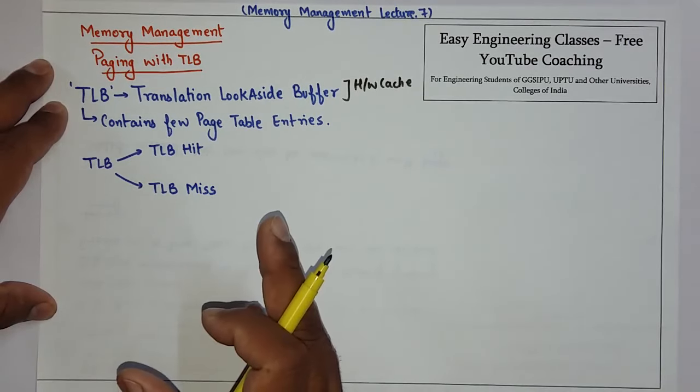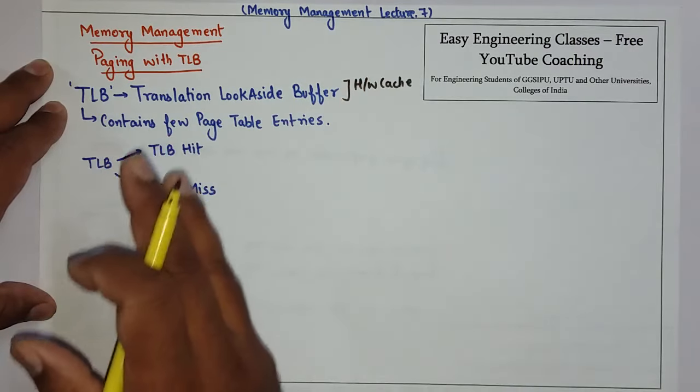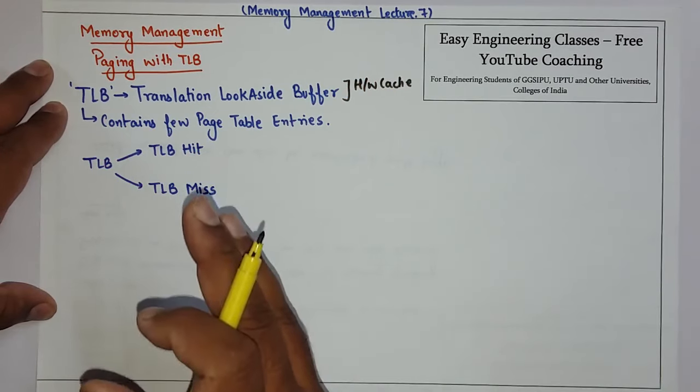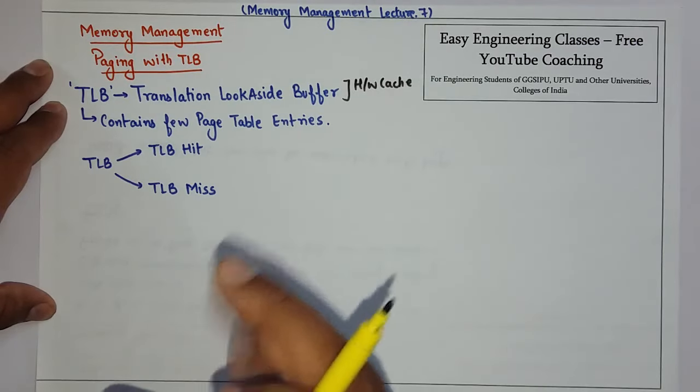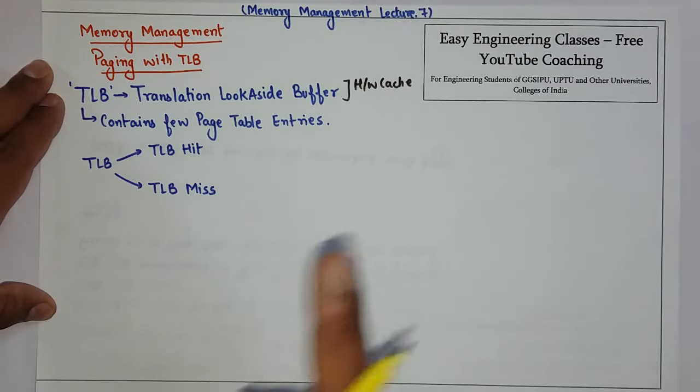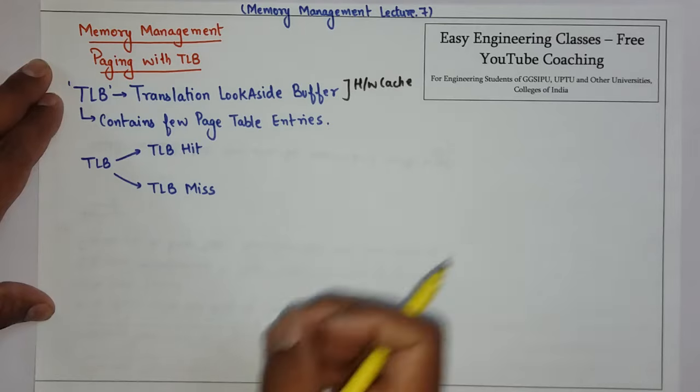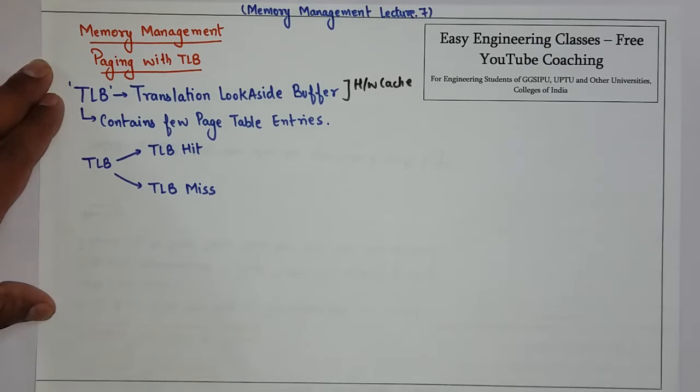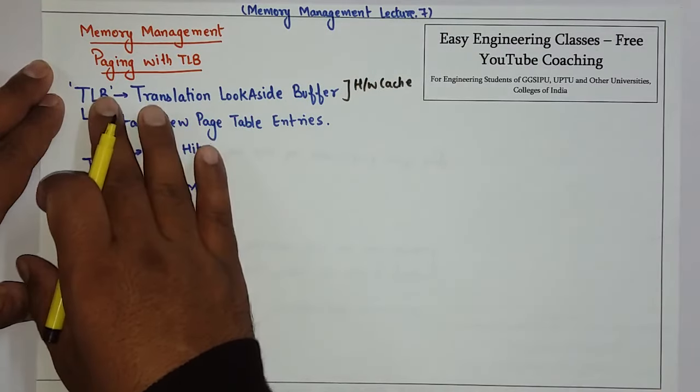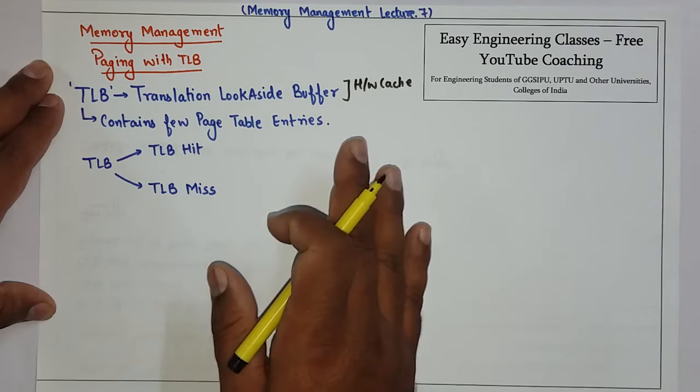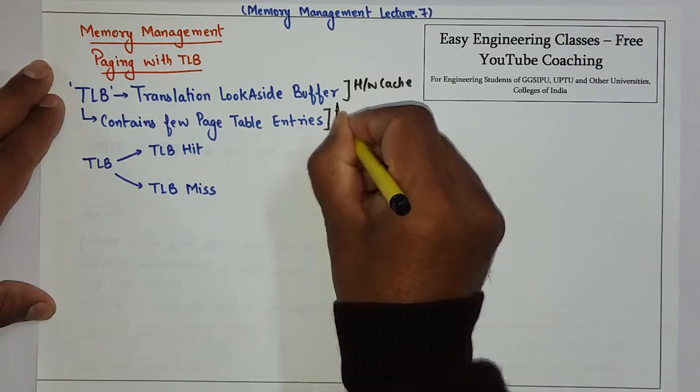The advantage is that without a hardware cache, frame mapping from the page table requires more memory accesses, taking extra time. To reduce memory access time, a hardware cache called TLB is used which contains frequently used page table entries.